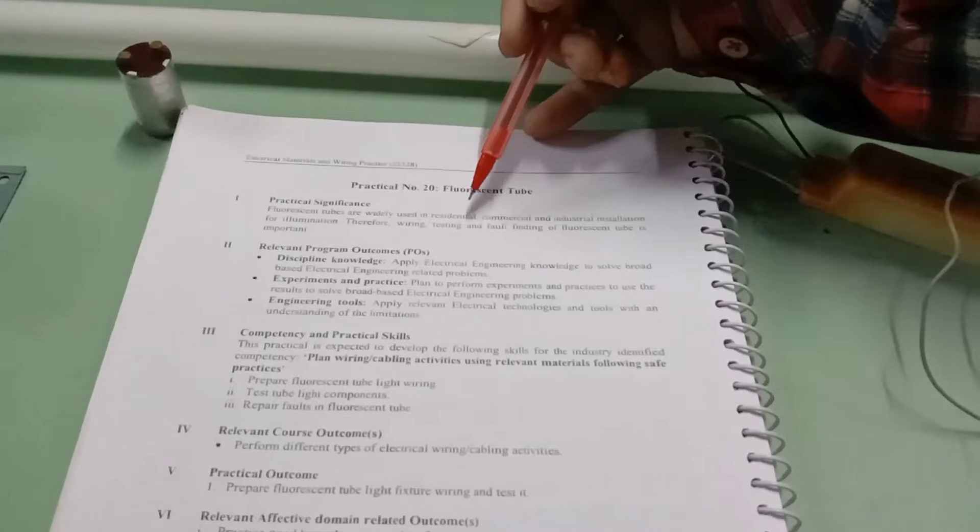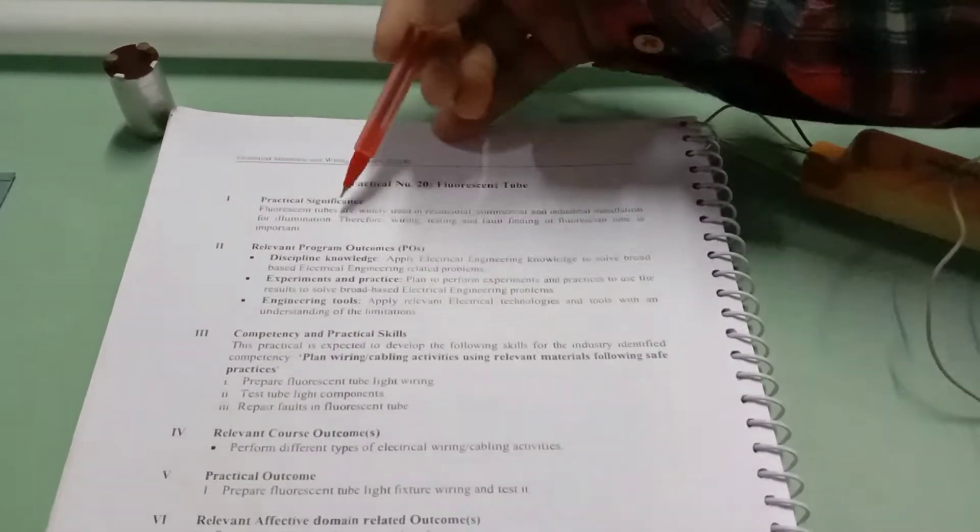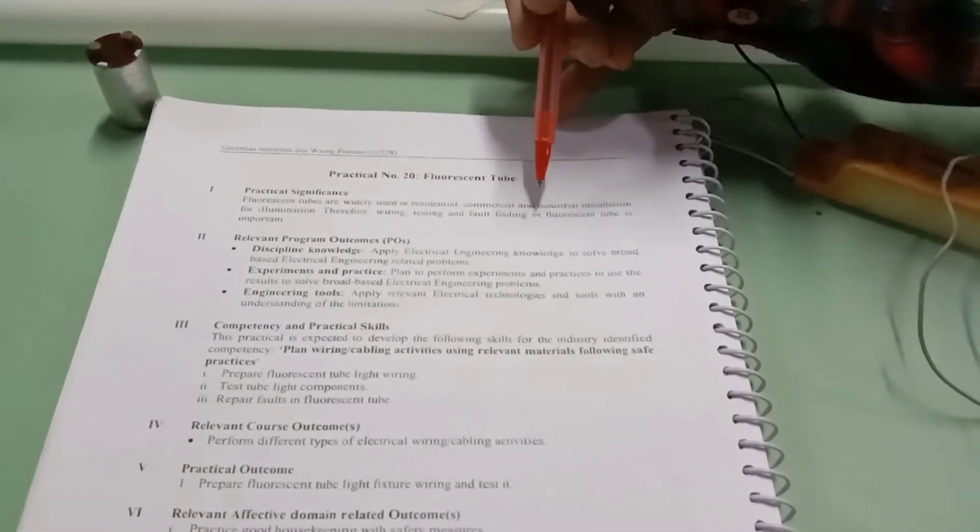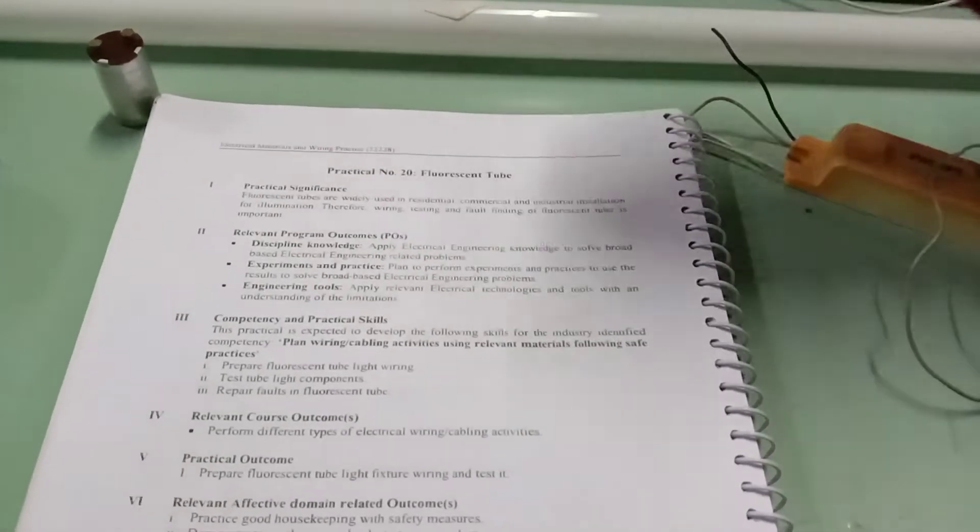Fluorescent tube lights are widely used in residential, commercial and industrial installation for illumination purpose. Therefore wiring, testing and fault finding of fluorescent tube light is very important.